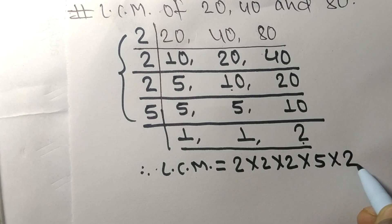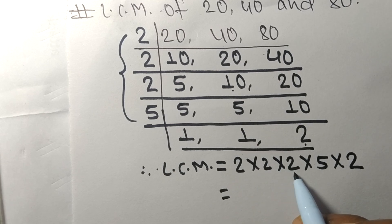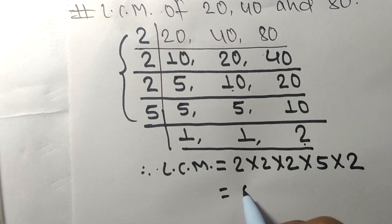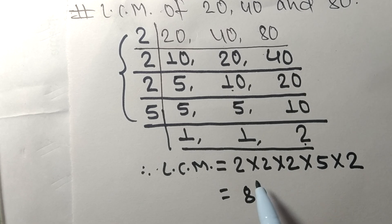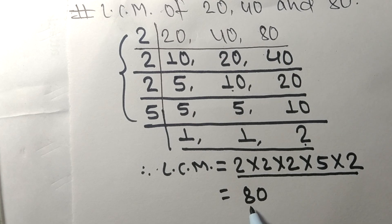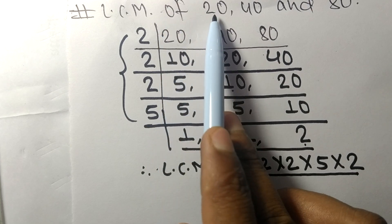So 2 times 2 means 4, 4 times 2 means 8, 8 times 5 means 40, 40 times 2 means 80. So by multiplying all these numbers we get 80. So 80 is the LCM of 20, 40, and 80.